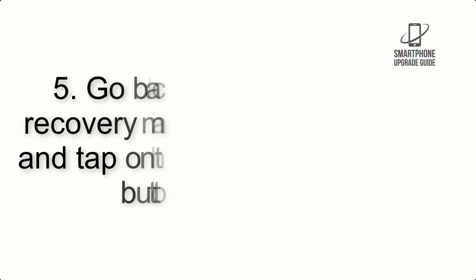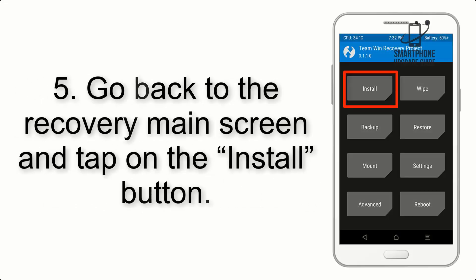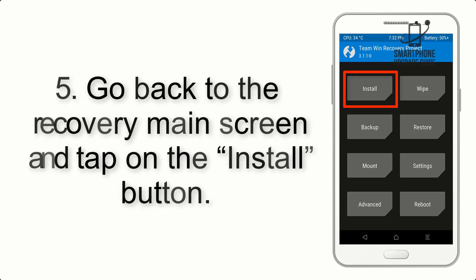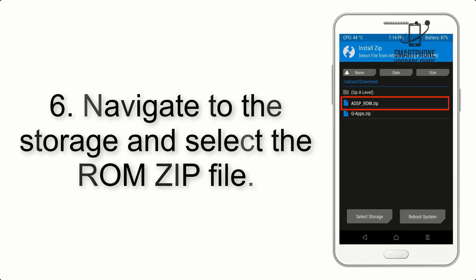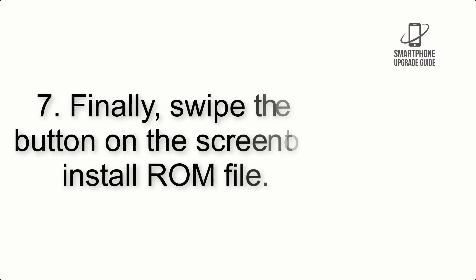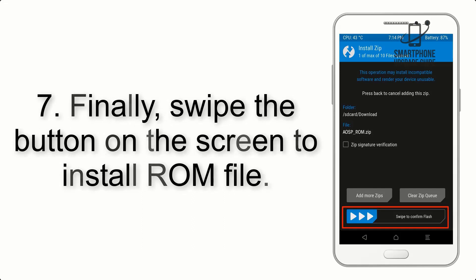Step 4: Swipe the button to wipe the device. Step 5: Go back to the recovery main screen and tap on the Install button. Step 6: Navigate to the storage and select the ROM zip file.